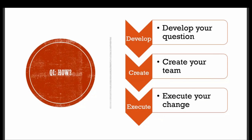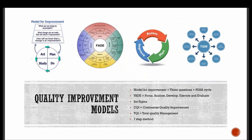How do we perform quality improvement? First, you have to develop your question. Then, you have to create your team. And then, finally, execute your change. There are many different tools that QI projects utilize — the FADE, Six Sigma, CQI, TQI, and seven steps models. We'll be focusing primarily on the Model for Improvement, which allows you to get from point A to point B.